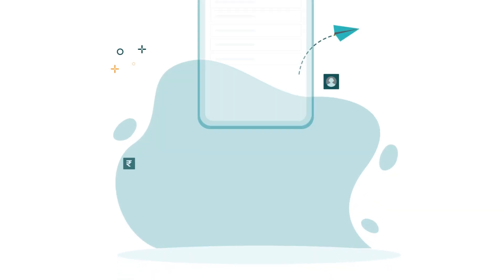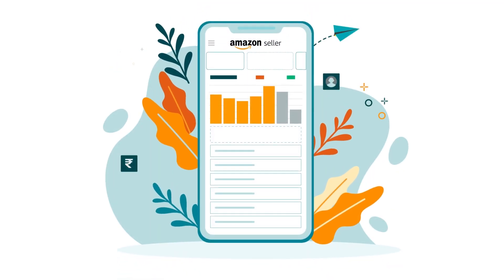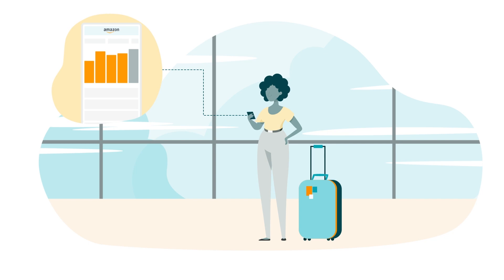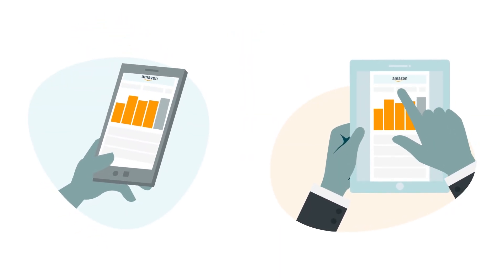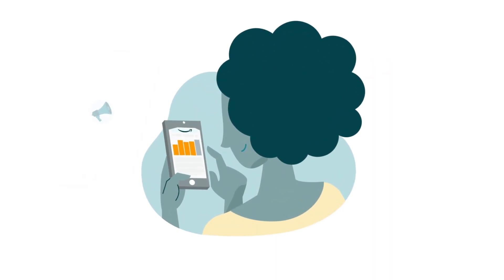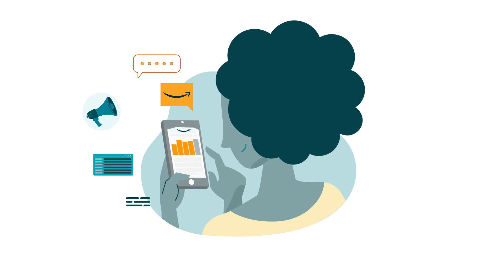The Amazon Seller App is a mobile app that lets you stay connected and resolve important issues of your marketplace account in real time from your portable device like a phone or tablet, while giving you access to your favorite Seller Central tools, which you may pick and choose to view on the app.